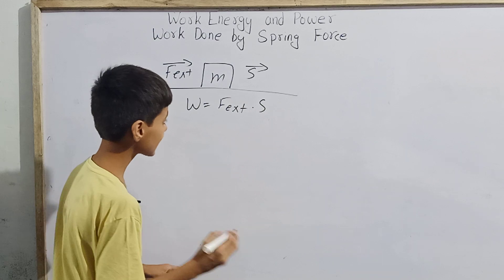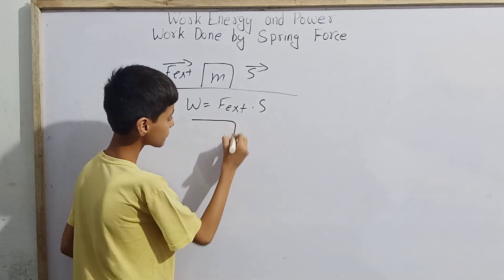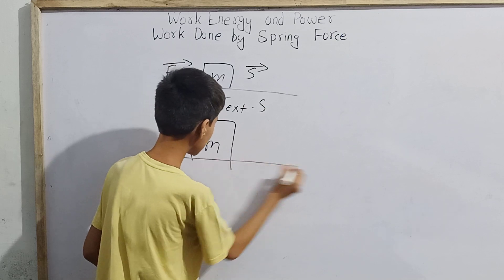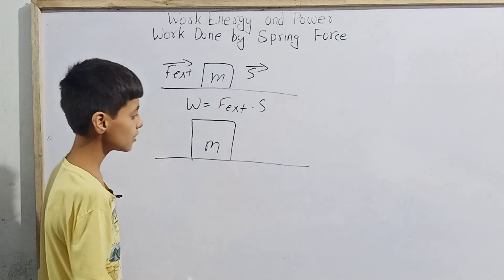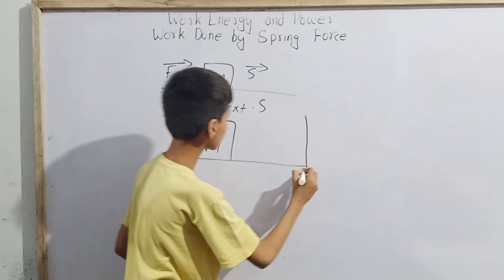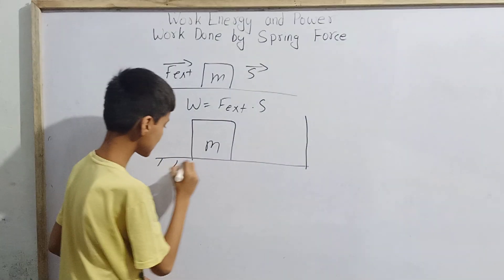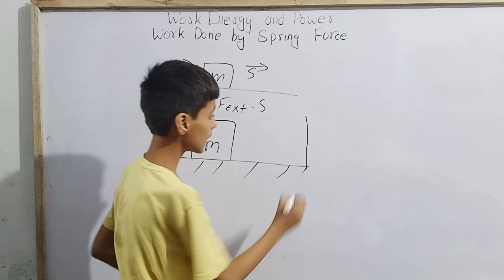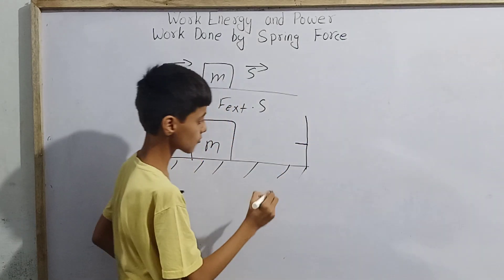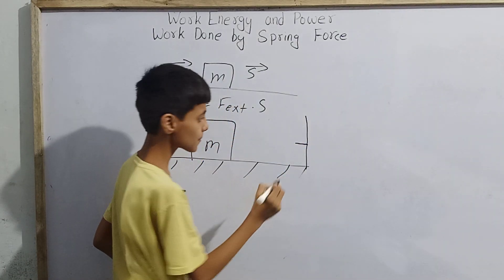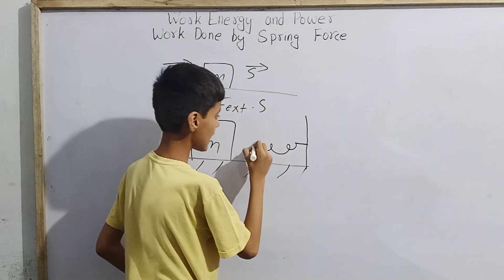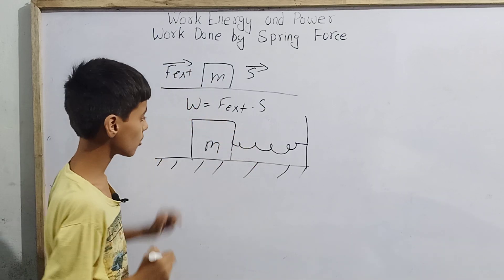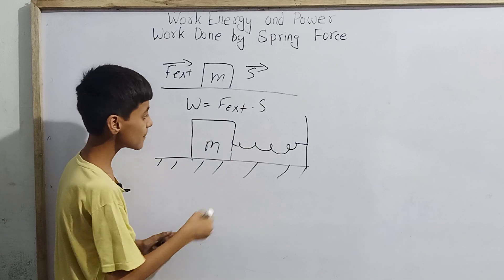In this video we are going to learn work done by spring force. Imagine we have a block of mass m kept over a surface. Here there is a wall, and near this wall a spring is attached — attached to the wall and also to the block of mass m.